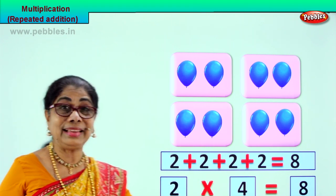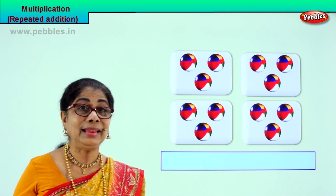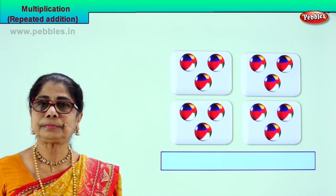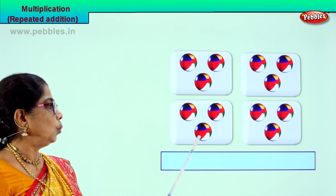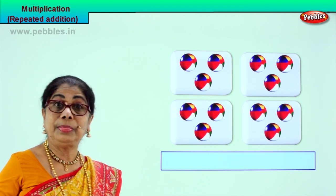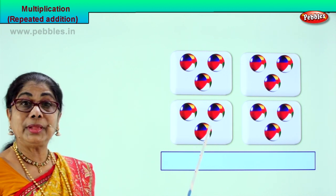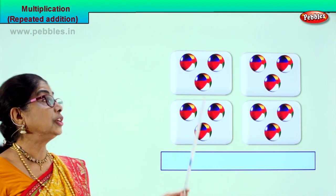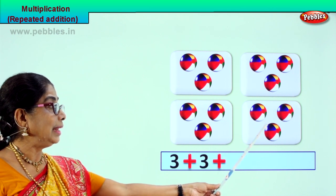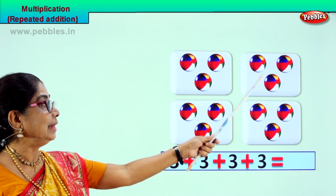Did you enjoy? It's beautiful, nicely laid out. Now shall we look at another exercise? Keep in mind: multiplication is repeated addition. We have here again four boxes. In each box there are balls. Let's count — one, two, three. One, two, three. One, two, three. One, two, three. There are three balls in each of the boxes.